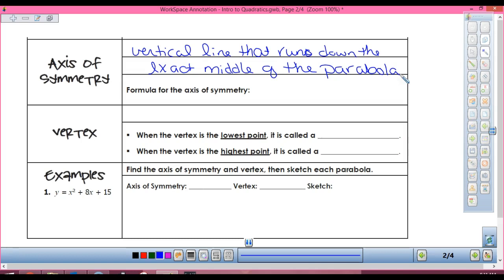So it's going to be a vertical one, that runs down the exact middle of the parabola. The formula for finding our axis of symmetry, if x equals - this is super important - the opposite of b, so we write that as negative b, but that means the opposite of b, divided by 2 times a. We use this a lot.